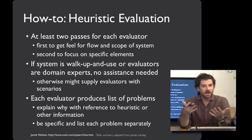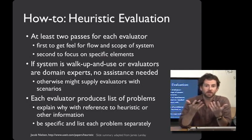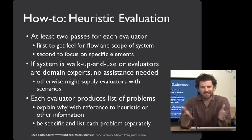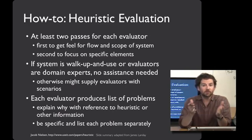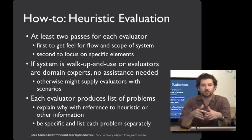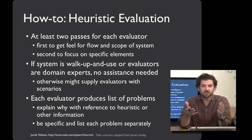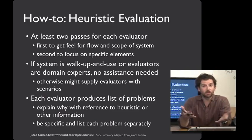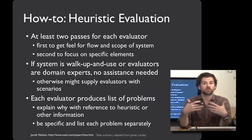Doing this kind of expert review can be really taxing, so for each scenario you lay out, it can be valuable to have the evaluator go through it twice. The first time they'll just get a sense of it, and the second time they can focus on more specific elements. If you've got a walk-up-and-use system like a ticket machine, you may want to give people no background information at all. On the other hand, if you have a genomic system or other expert user interface, make sure that whatever training you would give to real users, you give to your evaluators as well — the background should be realistic.